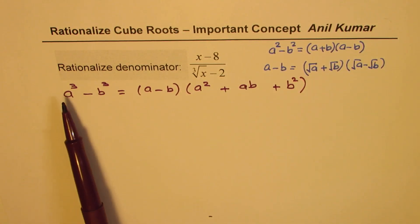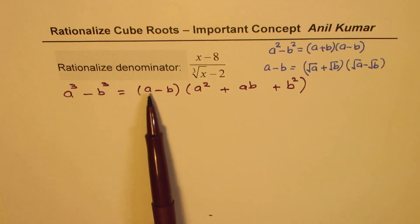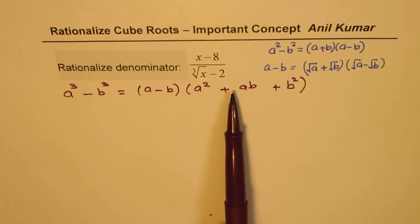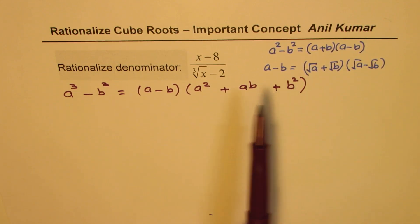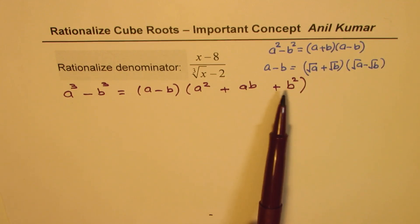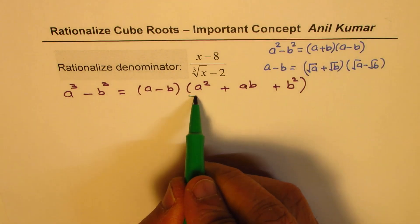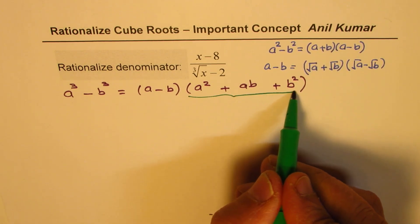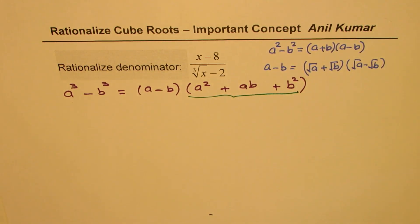Now, in order to get a cube minus b cube to the term which is a minus b, I should multiply by this value, the trinomial, a square plus ab plus b square, and that helps us to rationalize. So, the key here is to multiply and divide by this factor. So, I hope this basic concept is clear, and now let's try it out on the given question.